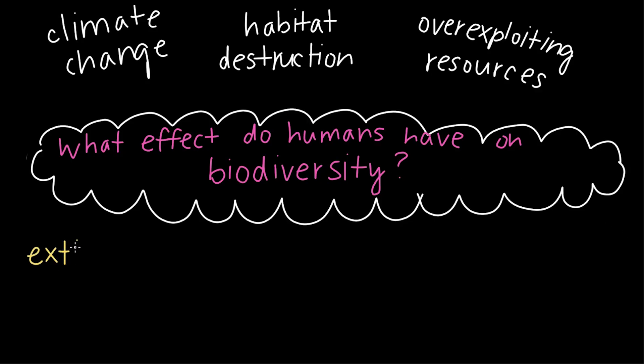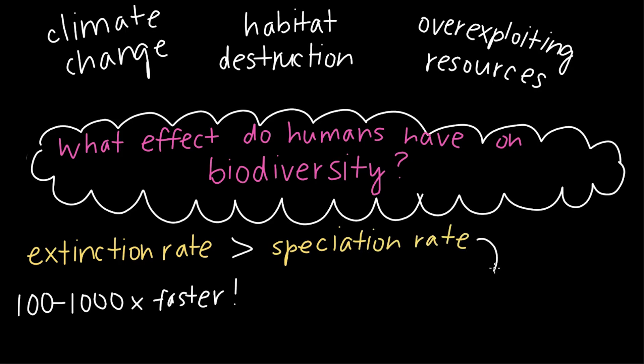In fact, species extinction is now occurring at a rate 100 to 1,000 times faster than the background rate detected in fossil records. And because the extinction rate is much bigger than the speciation rate, the result is an overall loss or decrease in biodiversity.